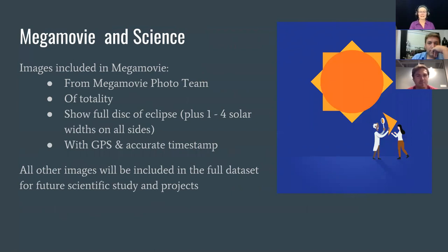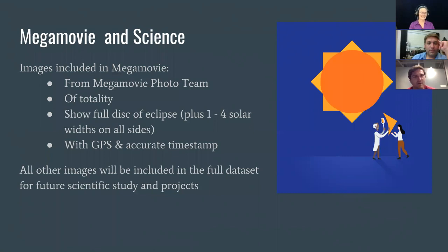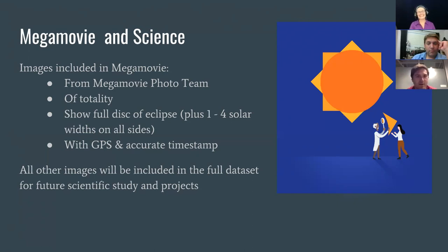So for the Mega Movie, the images that will be algorithmically included in the movie — which will be pushed out that day and in the days following the eclipse — are from this photo team, people who signed up ahead of time. Sign-ups actually close at the end of this week. The images included are only of totality, they have to show the full disc of the eclipse, and they have to have GPS and a timestamp. If they don't have those, we'll still keep them and use them for larger scientific efforts in the more manual processing period beyond the eclipse.